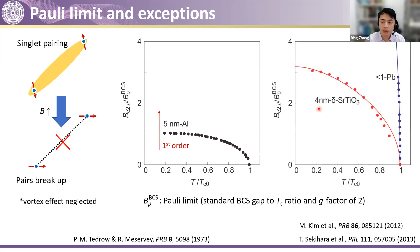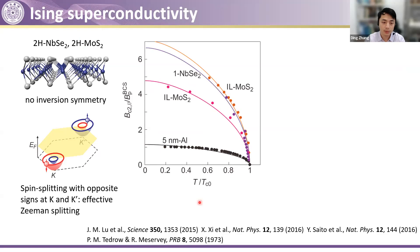People also found that in the low-temperature regime, the transition seems to be a first-order transition instead of a second-order. In recent years, people found systems — for example, four nanometer delta-doped STO or sub-monolayer lead — which clearly have much stronger spin-orbit coupling effects. As you can see, the Pauli limit is greatly exceeded. People already attributed these effects to something related to spin-orbit coupling. But at the end of 2015 and beginning of 2016, people identified a clearer mechanism, called Ising superconductivity.